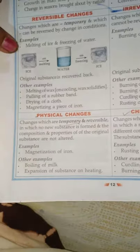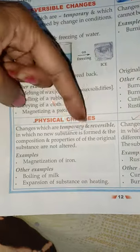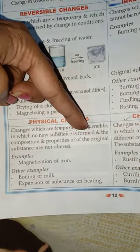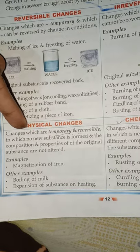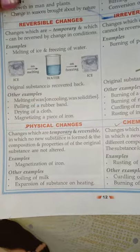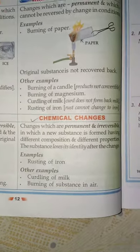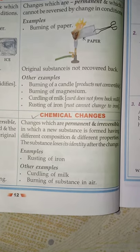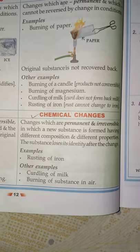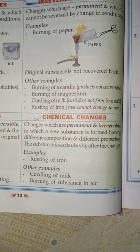Physical and chemical change — which is important. Physical changes are those which are temporary, reversible, and no new substances are formed, and the original properties and composition of the substance are not altered. Whereas chemical changes are those in which there is a permanent and irreversible change in which a new substance is formed with new composition and new properties, and the original substance loses its identity.